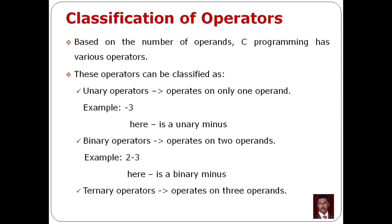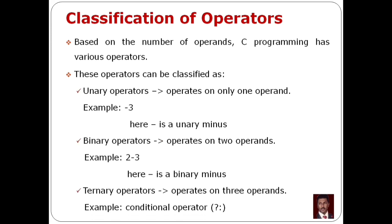The next one is the ternary operator. It operates on three operands. Example: the conditional operator, which uses a question mark and a colon. This conditional operator has three operands, as we can see.